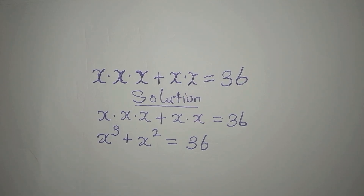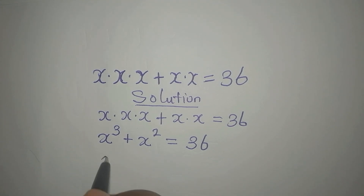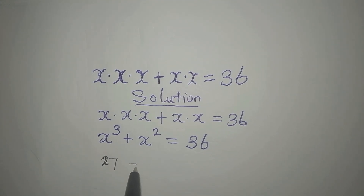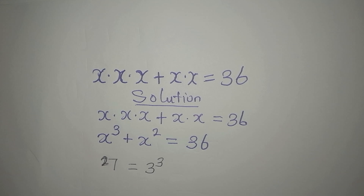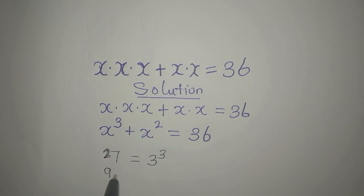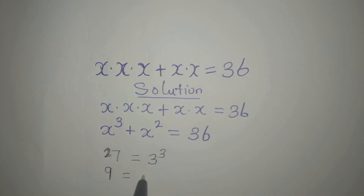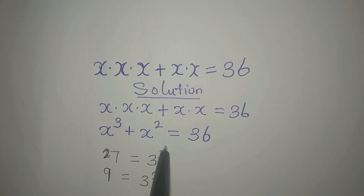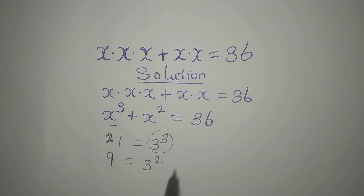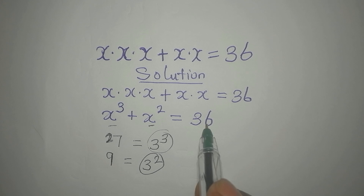Now, do not disturb yourself — just look at 36. You can express 36 in this form: 27 is found in 36, and 27 is the same thing as 3 to the power of 3. So we can write 27 from here, and the remaining part of 36 will be 9. Then 9 can be written as 3 to the power of 2.